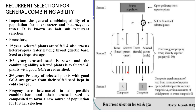In the second year, the crossed seeds are sown and the combining ability of selected plants is evaluated; plants with good combining ability are identified. In the third year, the progeny of selected plants with good combining ability are grown from their self-seed kept in cold storage. The progenies are intermated in all possible combinations and their crossed seed is composited to form a new source population for further selection.